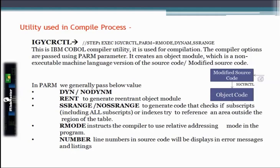The modified source code from pre-compilation is then compiled using the IGYCRCTL utility. In this step the code is checked for errors and the compiled version — the object code — is created. For IGYCRCTL we give parameters using PARM. IGYCRCTL is basically the IBM COBOL compiler utility used for compilation. It creates an object module which is a non-executable machine language version of the modified source code.